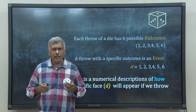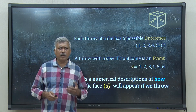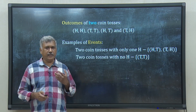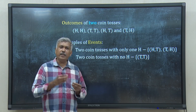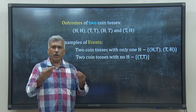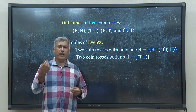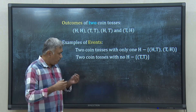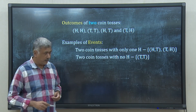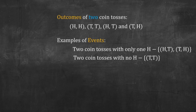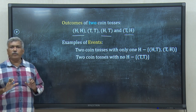The idea of outcomes and events can be a bit difficult to understand, so let us take another example. Suppose I have 2 coins and I toss them. Each toss gives a head or a tail. If I toss both of them one after another, I can have multiple outcomes: HH, TH, HT, or TT. So I have 4 possible outcomes.